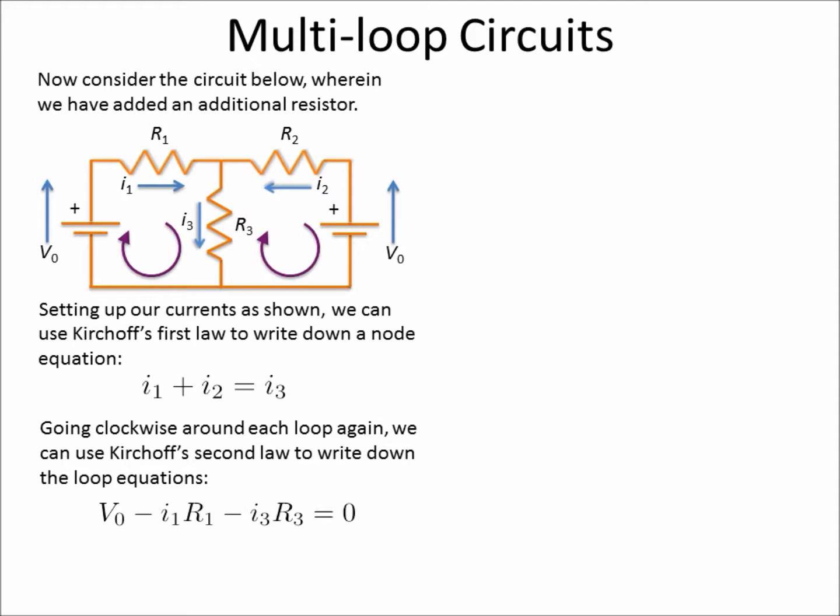So if we look at the first loop, we get V0 minus the loss from I1 traveling through R1 minus the loss of I3 traveling through R3. And those form a full loop, so they have to add up to zero.